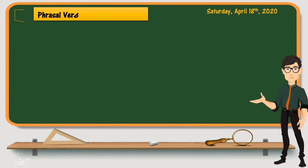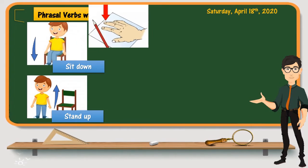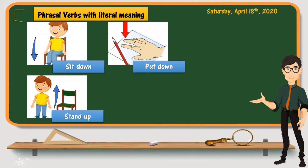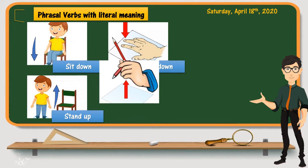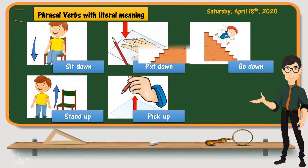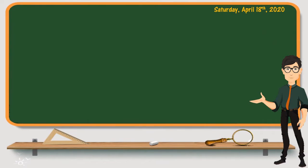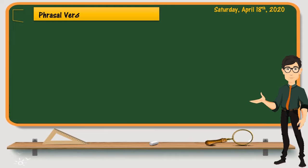If you are asked to give more examples of phrasal verbs with literal meaning, I'm quite sure you will think of examples like: sit down, stand up, put down, pick up, go down, and go up. These verbs are easily understood because they have a clear, literal meaning.